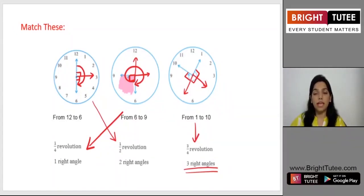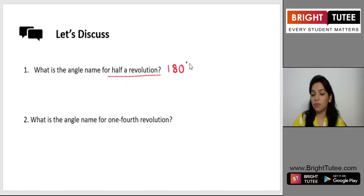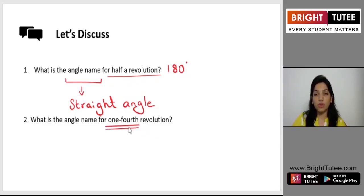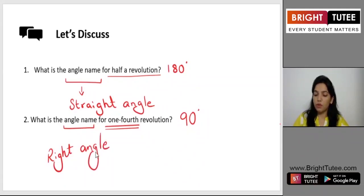Let us understand this better. What is the angle name for half a revolution? Half a revolution is 180 degrees, so the name of the angle is straight angle. What is the angle name for one fourth revolution? One fourth revolution is 90 degrees, so we call it a right angle. I hope you are confident with these answers.